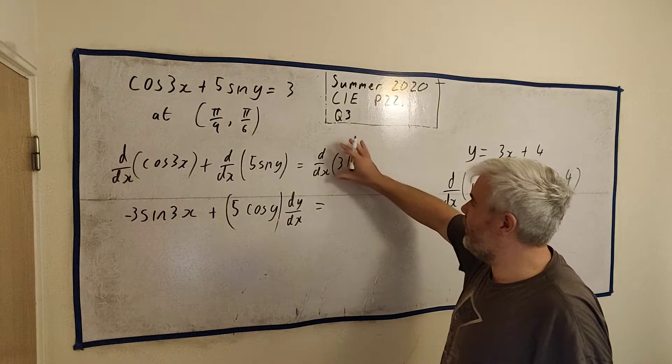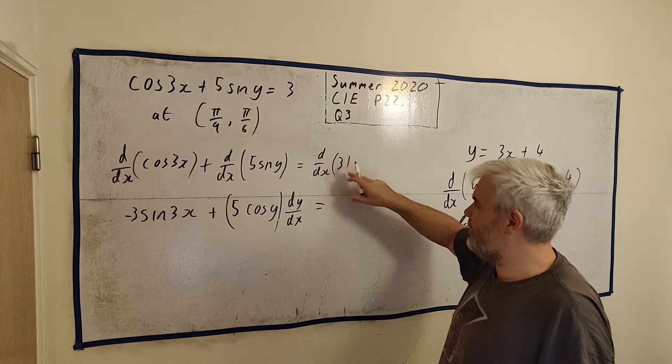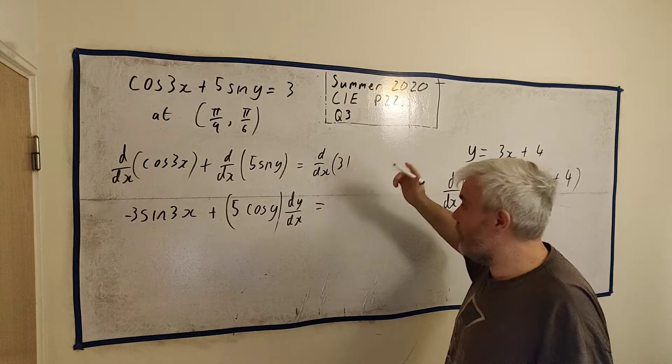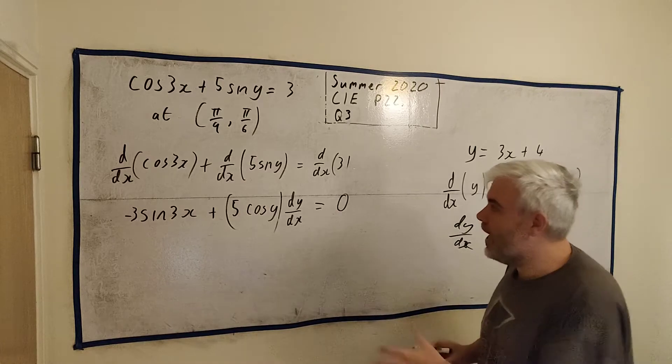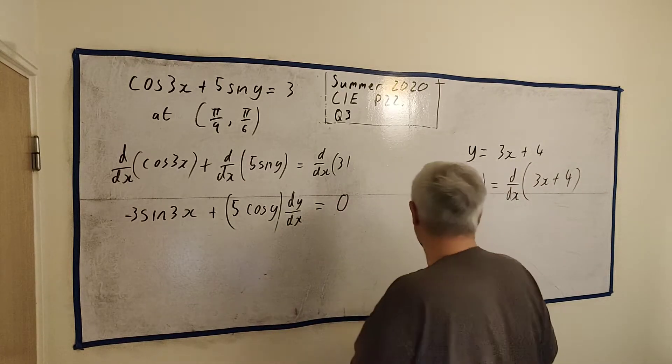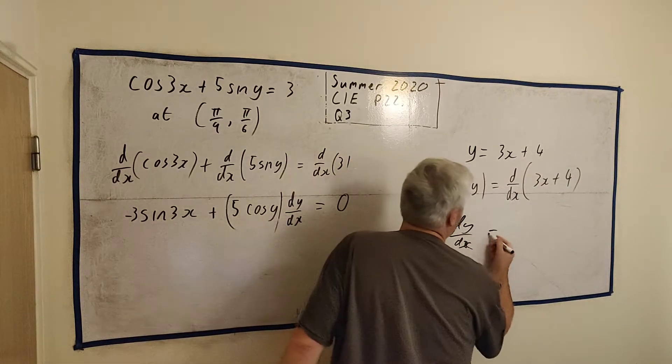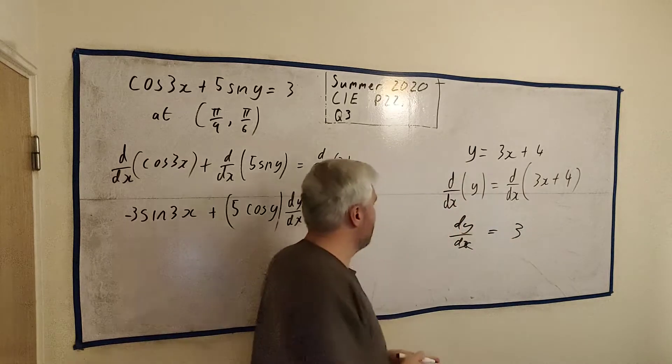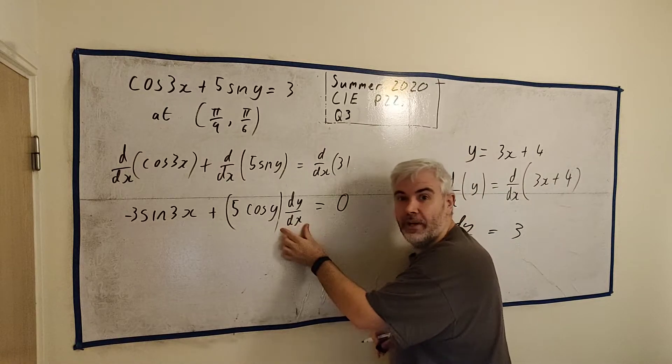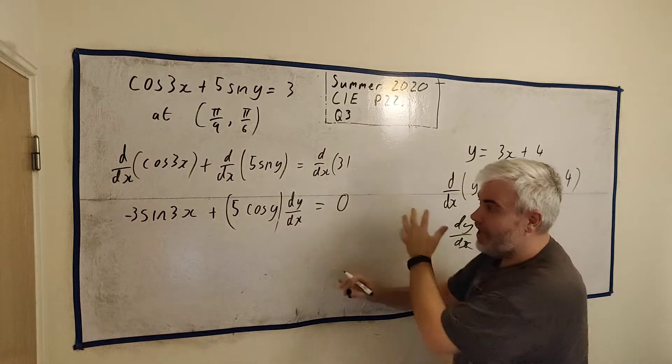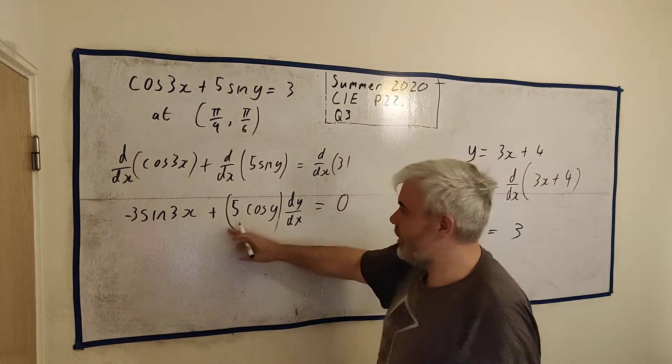On the right-hand side, the derivative of 3. As x changes, what happens to 3? Well, it doesn't change. So its derivative is 0. So now we've sort of got what we wanted. Just like over here, we get what we want. Here, we got dy/dx. All we have to do is rearrange it now so it's on its own.